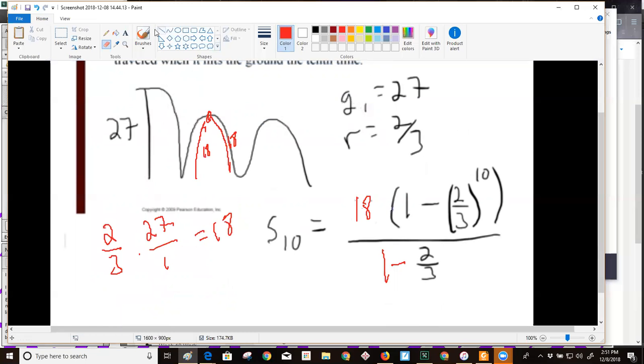This sum S sub 10 worked out to be 53 plus a little bit, 0.06 and some other decimal places. That's only one direction.